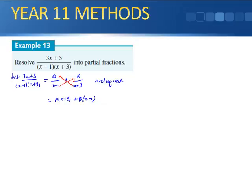Equating numerators, we get A(x + 3) + B(x - 1) = 3x + 5. The easiest way is to substitute strategic values of x. Substituting x = 1: 3 + 5 = 8, and (1 + 3) = 4, so 8 = 4A, giving A = 2.